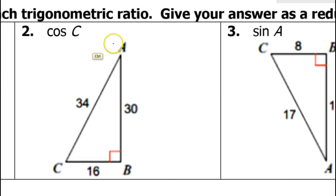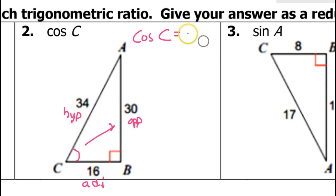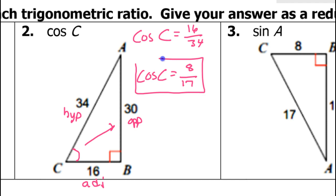Similarly, problem number 2: cosine of angle C. From the perspective of angle C, the 16 is the adjacent leg, the 30 is the opposite leg, and the 34 is the hypotenuse because it is across from the 90-degree angle. Cosine is defined as adjacent over hypotenuse, so that would be 16 over 34. Both are divisible by 2, so that reduces to 8 over 17. Always reduce.